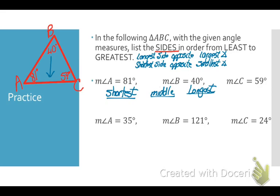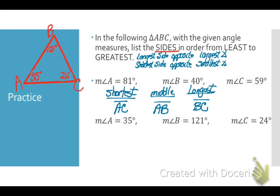I identify my smallest angle, which is 40 degrees. Opposite angle B of 40 degrees is side AC, so AC is my shortest side. My biggest angle is 81 degrees, and opposite that is side BC, making it my longest side. The only side left is AB, which is in the middle. Those are my sides listed from shortest to longest.